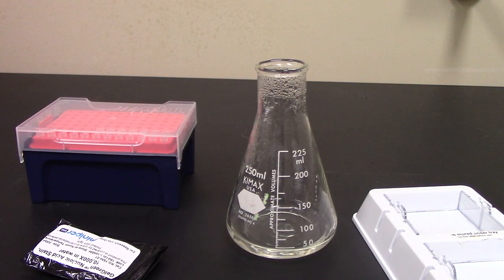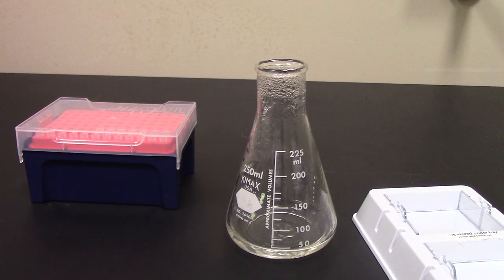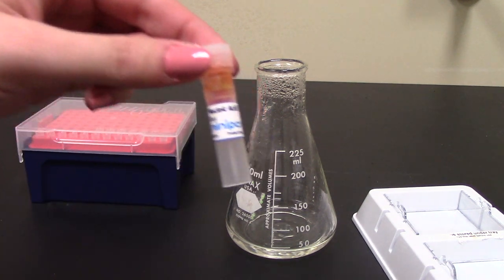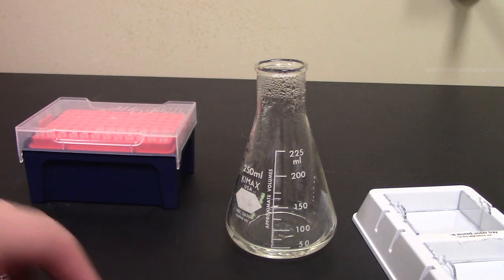Now that my gel has become cool enough to touch, I am going to add the gel green nucleic acid stain. Again, I'm making a 3% gel—I had 0.6 grams of everyday agarose and 20 milliliters of 1x TBE—so now I'm going to be adding 2 microliters of the gel green nucleic acid stain.